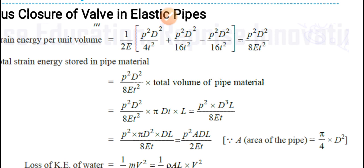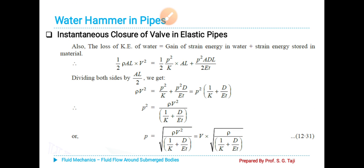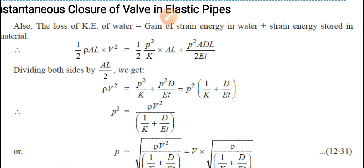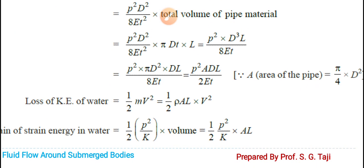This expression can also be written in another form as p²·A·D·L/(2Et), where E is Young's modulus of elasticity of the pipe material. You should analyze and derive this step yourself, as the area of the pipe equals (π/4)D² — that's the hint. This gives you some brain work at home.